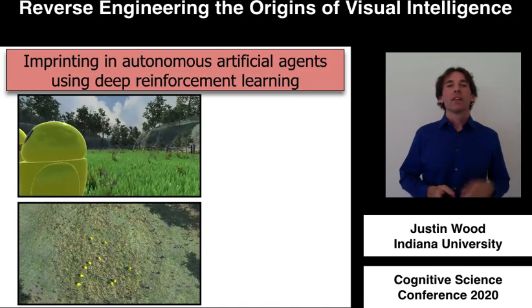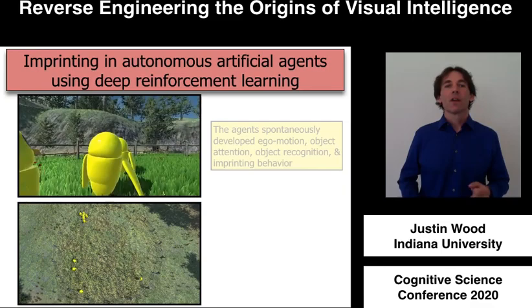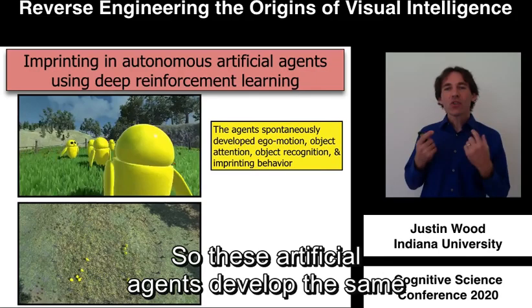The video on the top shows a first-person perspective from one of the agents, and the video on the bottom shows a bird's eye view of all of the agents. Remarkably, we found that the agents spontaneously develop ego motion, object attention, object recognition, and grouping behavior. So these artificial agents develop the same kind of imprinting behavior that we see in newborn chicks.